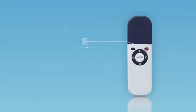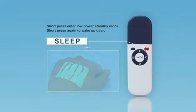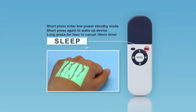Short press sleep button to enter low power standby mode. Short press again to wake up device. The default setting is that device enters standby mode automatically if no operation for 10 minutes. Long press sleep button for 3 seconds to cancel timer function, which will be shown when the timer character in top left of projected image disappears.